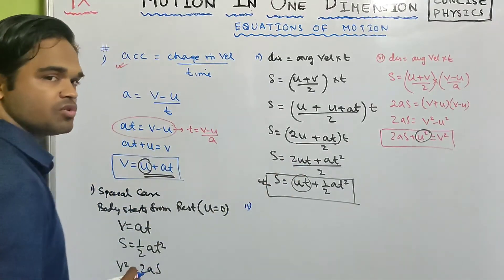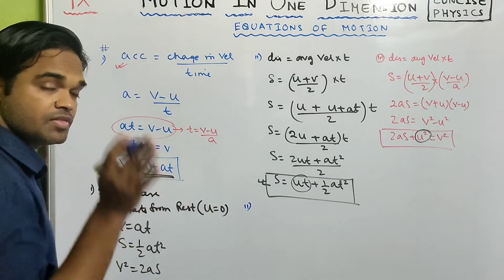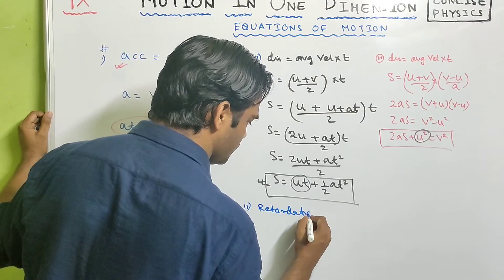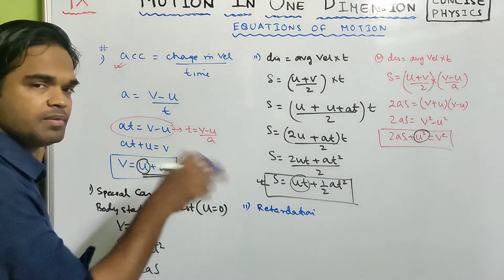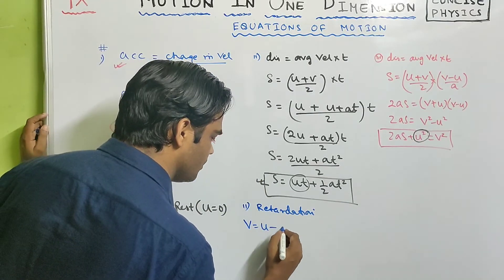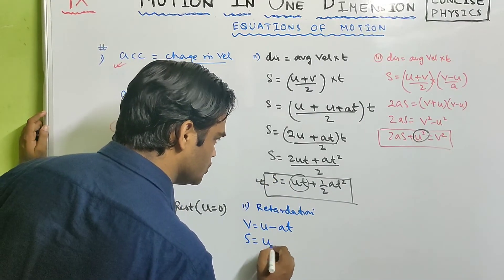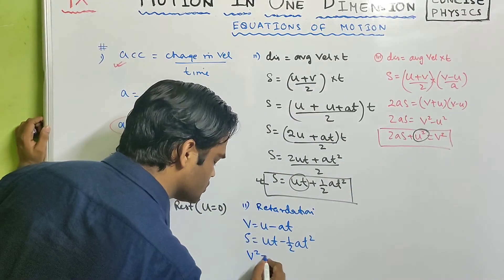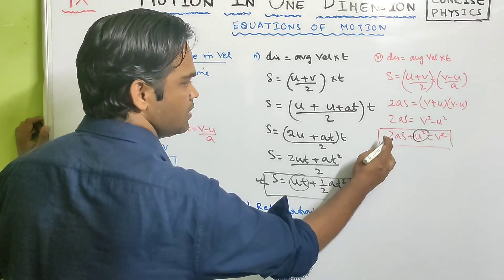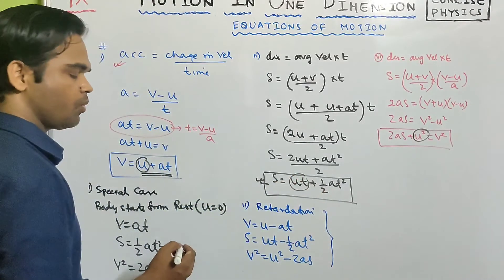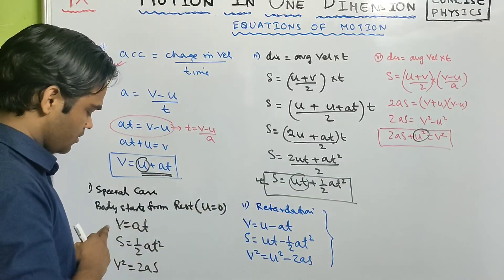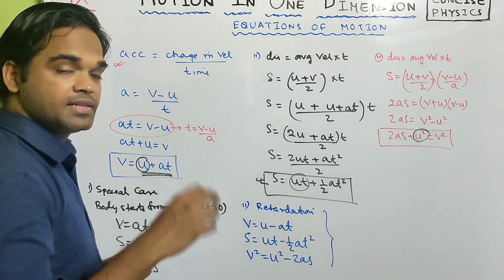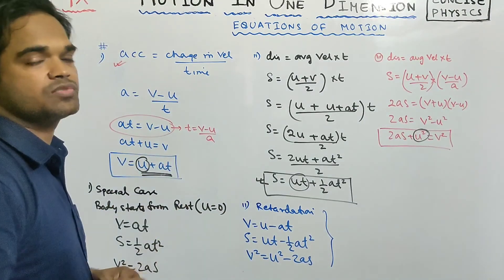Second special case: retardation, which is negative acceleration. When there is retardation, a becomes negative in the equations, giving: v equals u minus at; s equals ut minus half at squared; and v squared equals u squared minus 2as. Remember all these equations as they will be needed for numerical problems.